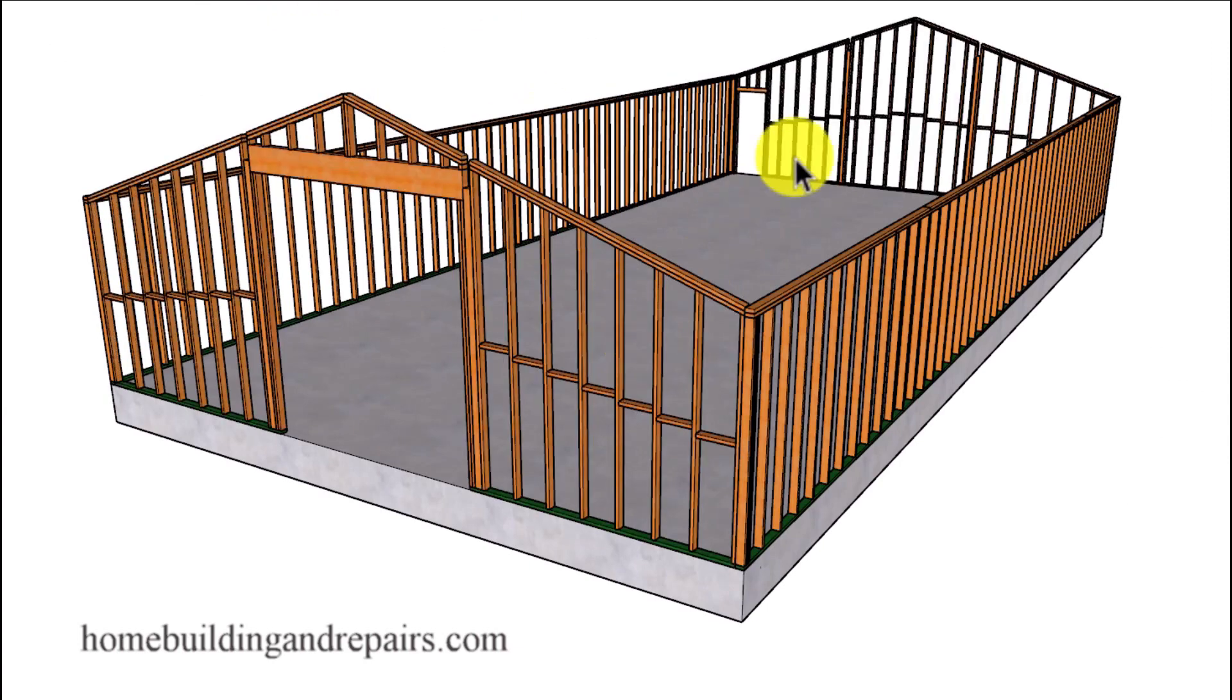However our front and our back wall will be different. I went ahead and framed this for a larger opening. I believe it's about 10 foot by 10 foot, and then I put a 32 inch wide door in the back. You can always install a door over here or over here or anywhere along these walls using the same method.